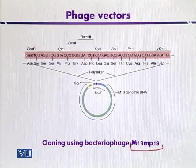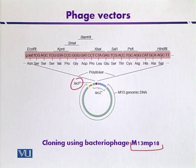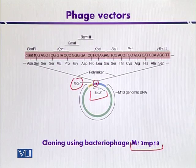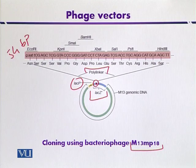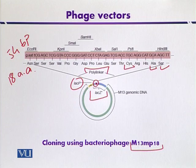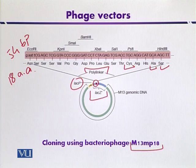M13mp18 contains the lac promoter, which is a segment of DNA that causes transcription of genes under its control. This vector also contains the lacZ gene that encodes the enzyme beta-galactosidase. At the start of the lacZ gene, there is a poly linker molecule shown in red — it may be up to 54 base pairs and may encode up to 18 amino acids. The addition of these amino acids within the product of the lacZ gene does not affect the efficacy of beta-galactosidase.